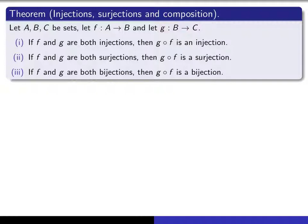In the first part of the theorem, we show that if f and g are both one-to-one functions, then f composed with g is necessarily one-to-one. In the second part, if f and g are both onto functions, then the composition f composed with g is also onto. And finally, if f and g are both bijections, then f composed with g is a bijection.